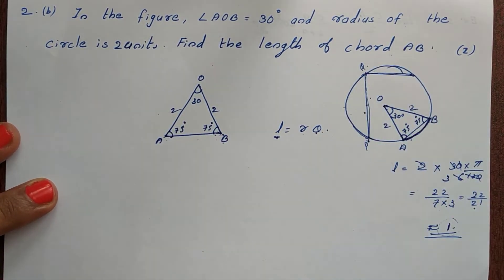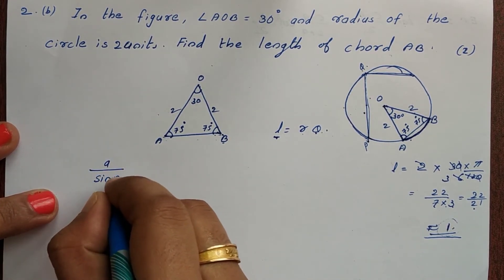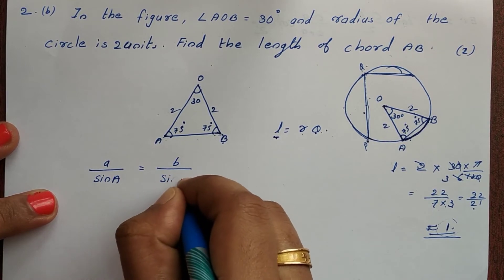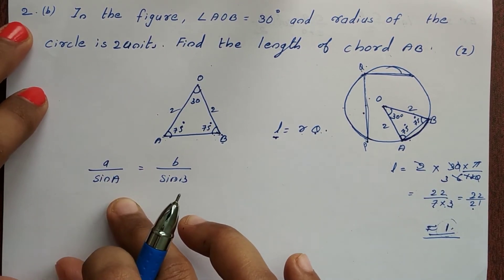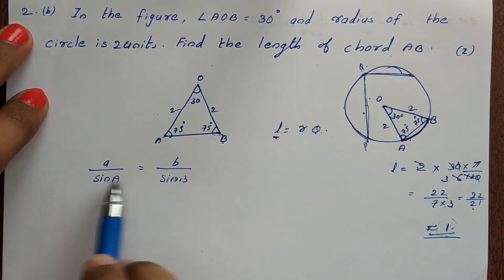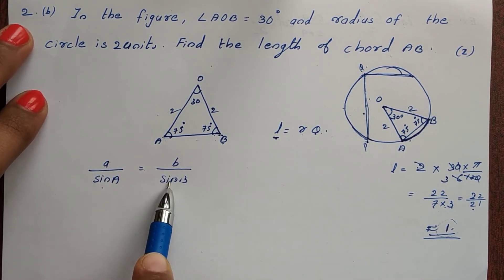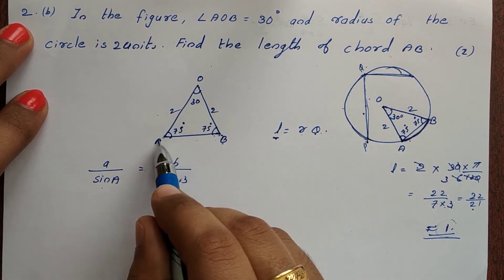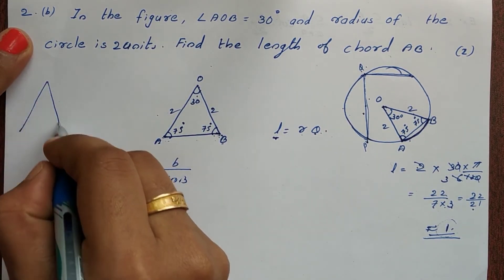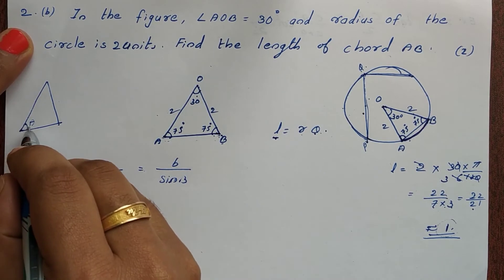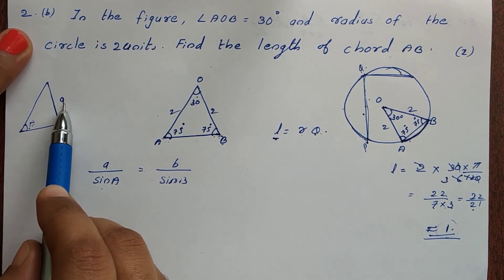To find the chord length, we use the sine rule: a/sinA = b/sinB = c/sinC. In any triangle this equation is valid. Here the angle opposite to side AB is angle AOB.